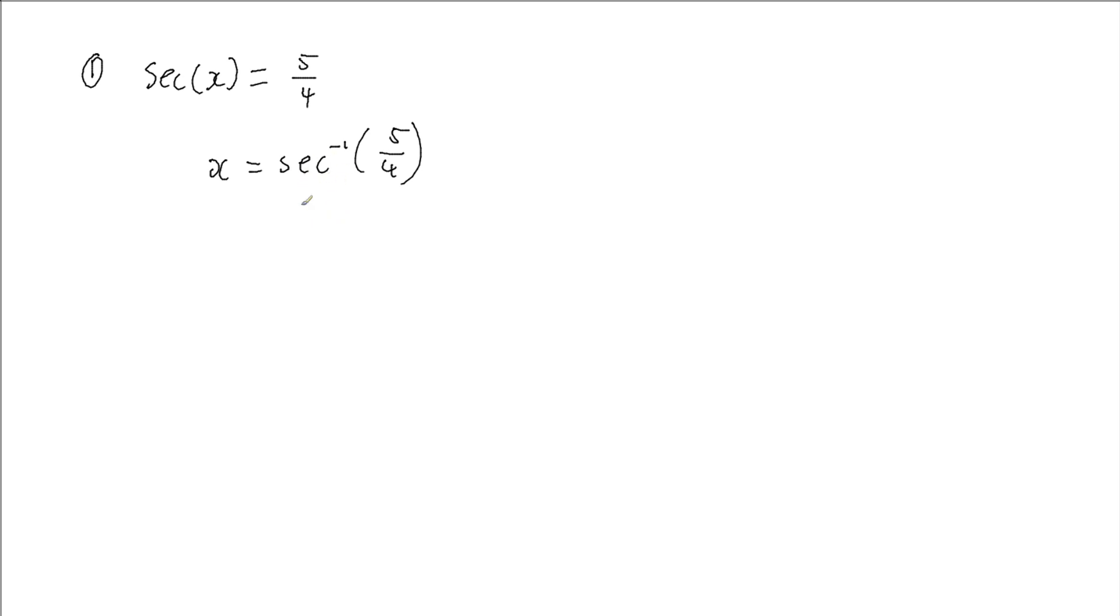Now, to work out the inverse of secant, it's actually easier if we take a bit of a sidestep before we get to that, and actually think about secant as being 1 over cos x, which it is. So we've got 1 over cos x equals 5 over 4.